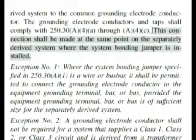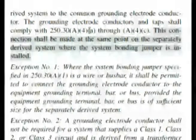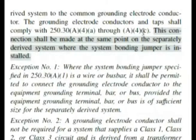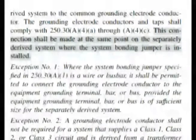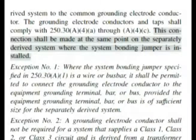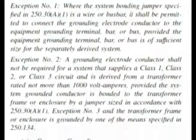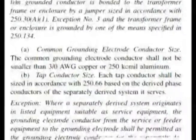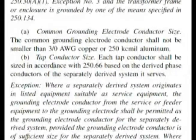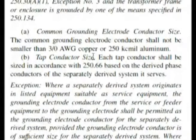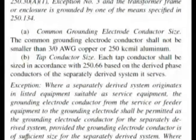Here we are at the top of the next column, continuing in section 250.30(A)(4). It says these shall comply with (A)(4)(a) through (A)(4)(c). That is going to be just below, because we have some exceptions. Scrolling down, we see: A — common grounding electrode conductor size; B — tap conductor size. These are the bold headings in italics, so you would read to see if that matched what we wanted. Let's go down to C.